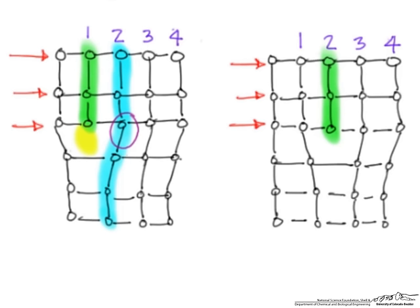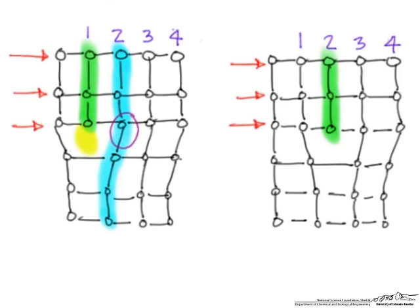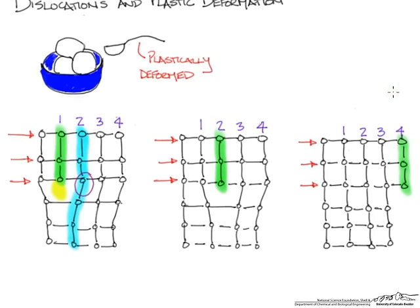If we keep applying our shear force, our dislocation is going to keep moving. Our defect will keep moving all the way to the end. Then we'll have a situation where our final lattice will look like this. In this case, our edge dislocation has moved all the way to the end, so now it's in plane four.